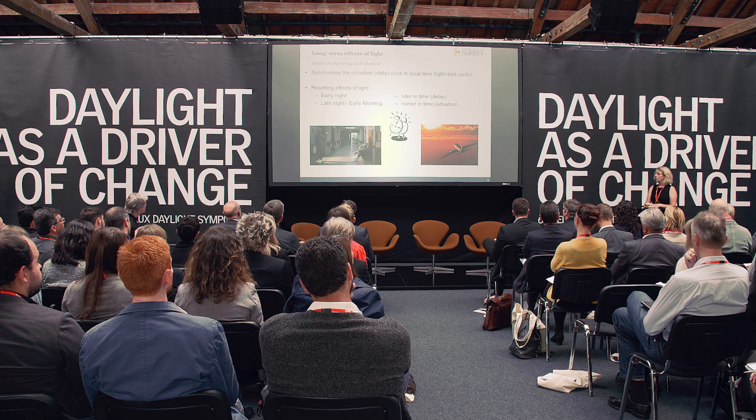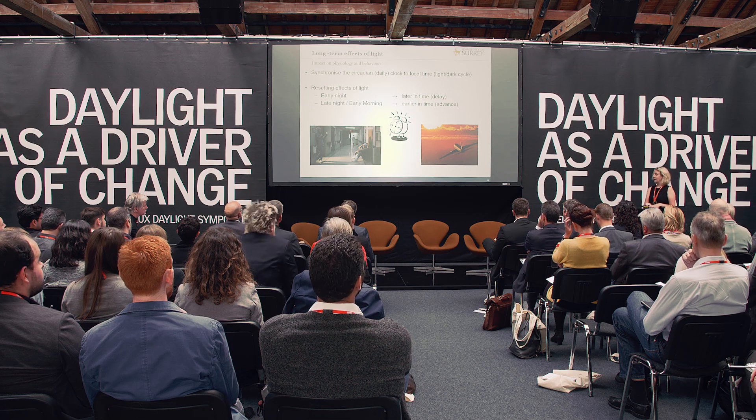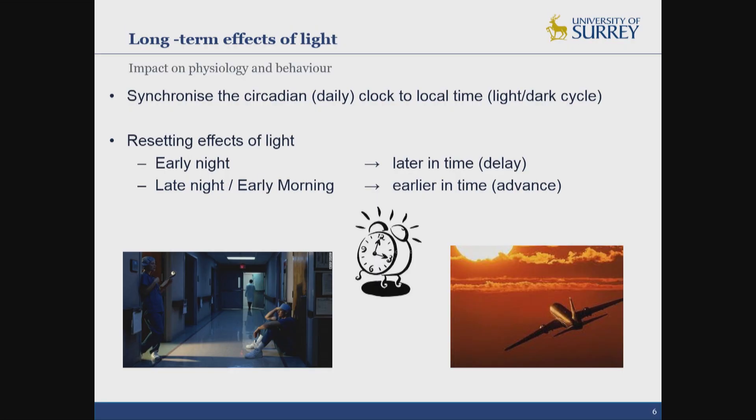Light has different effects depending on the time of day that you administer it. If you give light in the early part of the night, it will push your body clock later in time — a phase delay — which is what you would want if you were flying westward, for example to the States. By contrast, if you give light in the very late night or early morning, it pushes your clock in the opposite direction, shifting it earlier in time — which is what you would want if you were flying eastward, for example to Asia. There are certain situations where the body clock is not appropriately synchronised to local time, such as night shift work and jet lag.